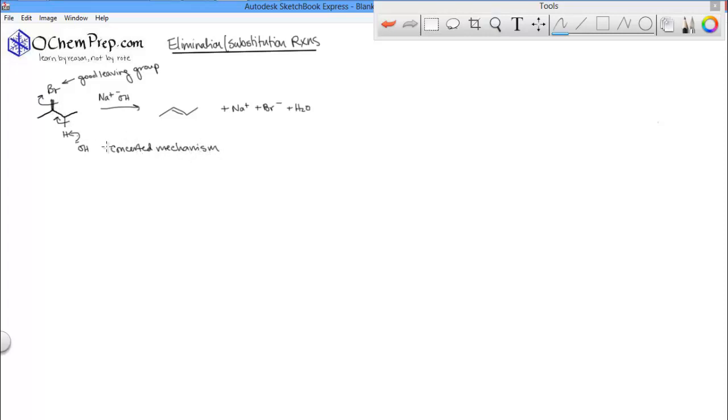Now, the other thing we're going to talk about with this mechanism is a little bit of kinetics. This is called an E2 mechanism. E, of course, stands for elimination. But this little 2 stands for bimolecular, which is a kinetic term for the fact that there are two molecules, OH- and the alkyl halide, involved in the rate-determining step.